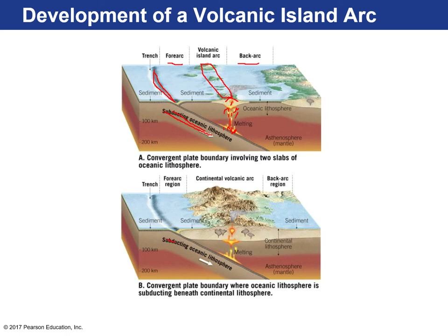In the second example, subducting ocean lithosphere converges with continental lithosphere. More melts become batholiths because the density of continental lithosphere is low, so they most often crystallize deep underground. But many do make it to the surface as volcanoes, forming the continental volcanic arc. The same regions apply — forearc, trench, and backarc.